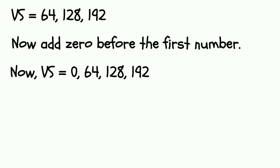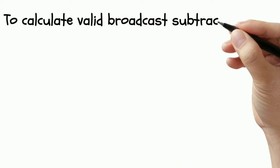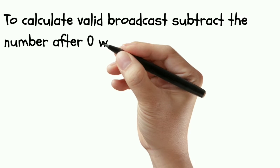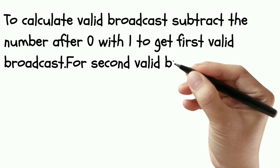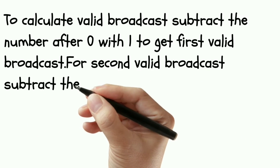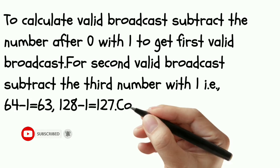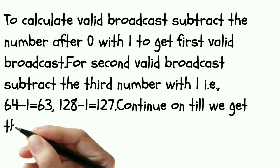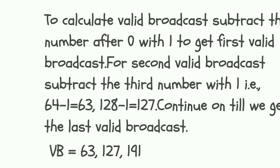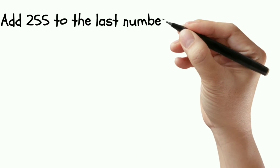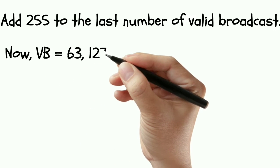To calculate valid broadcast subtract the number after 0 with 1 to get first valid broadcast. For second valid broadcast subtract the third number with 1, that is 64 minus 1 is 63 and 128 minus 1 is 127. Continue on till we get the last valid broadcast. So valid broadcast is 63, 127 and 191. Add 255 to the last number of valid broadcast. Now valid broadcast is 63, 127, 191 and 255.